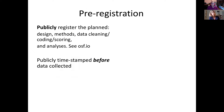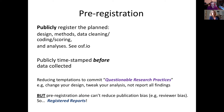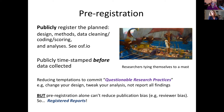Pre-registration is where you publicly register the planned design, methods, data cleaning, and analysis at the Open Science Framework, date-and-time stamped before you collect your data. One reason for doing this is to reduce temptations to commit questionable research practices — such as changing your design halfway through, tweaking your analysis, or not reporting a finding. By pre-registering your study, you demonstrate that you did what you said you would do. Researchers are effectively tying themselves to a mast so they don't get tempted to change their designs.